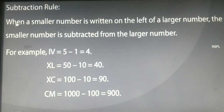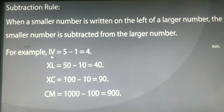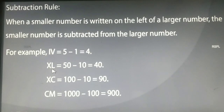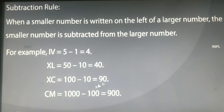Subtraction rule: when a smaller number is written on the left of a larger number, the smaller number is subtracted from the larger number. For example, IV means 1 has to be subtracted from 5, so we do 5 minus 1 equals 4. Similarly, XL means L (50) subtract X (10), giving you 40. XC means 100 minus 10 equals 90. Similarly, CM means 1000 minus 100, which gives you 900.